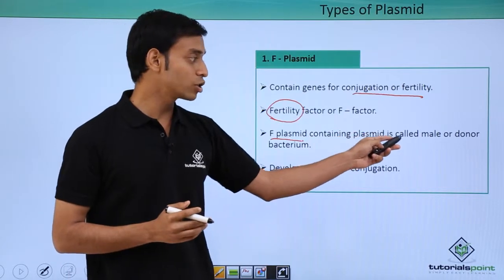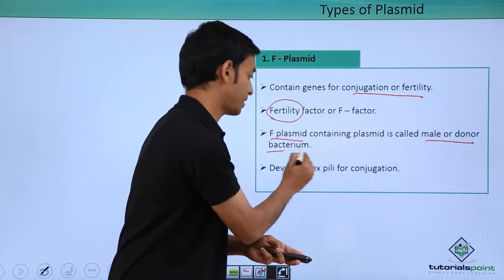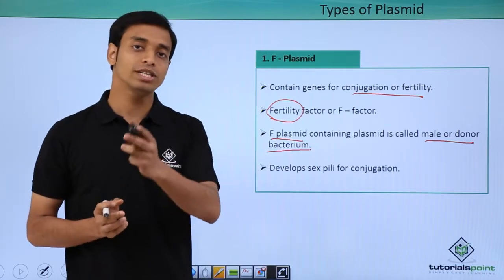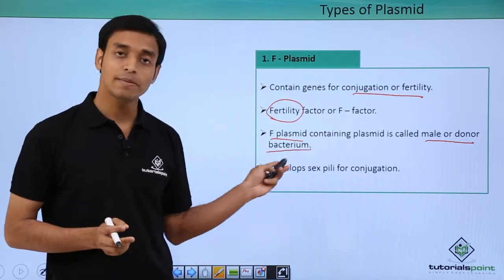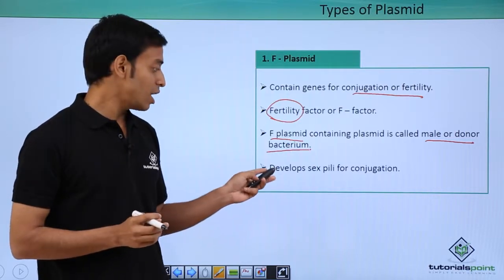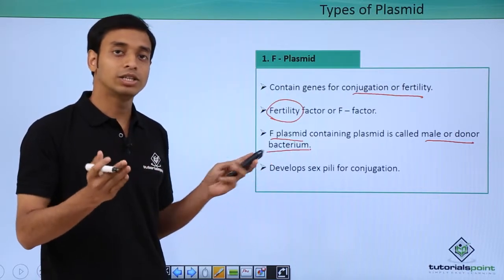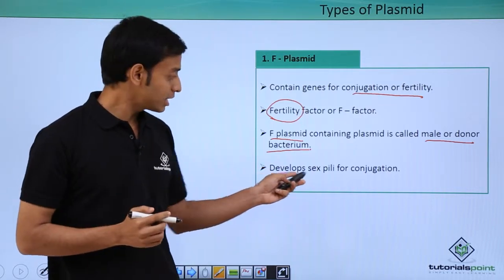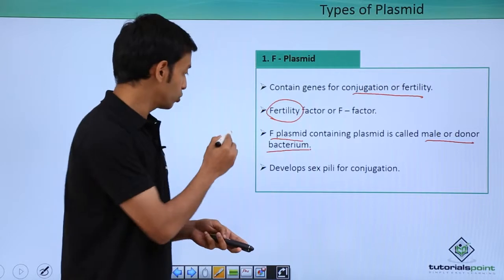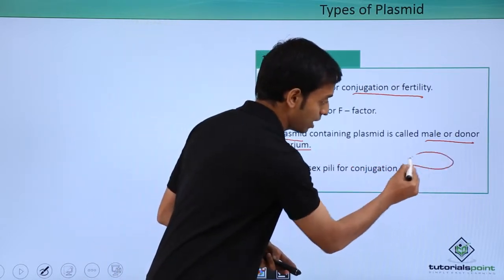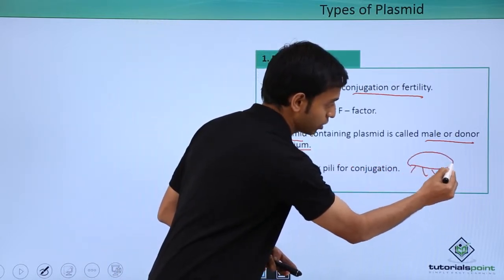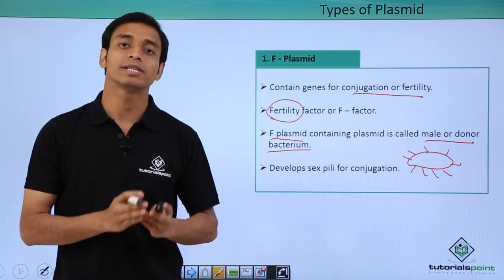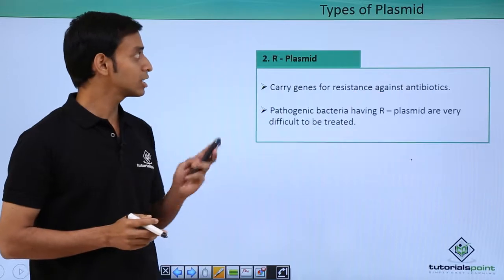If a bacterial cell has an F plasmid, it is called a male or donor bacterium. If it does not have the F plasmid, it is called the recipient or female bacterium. These cells develop sex pili for conjugation — the pili are structures that help in the method of conjugation between bacterial cells.